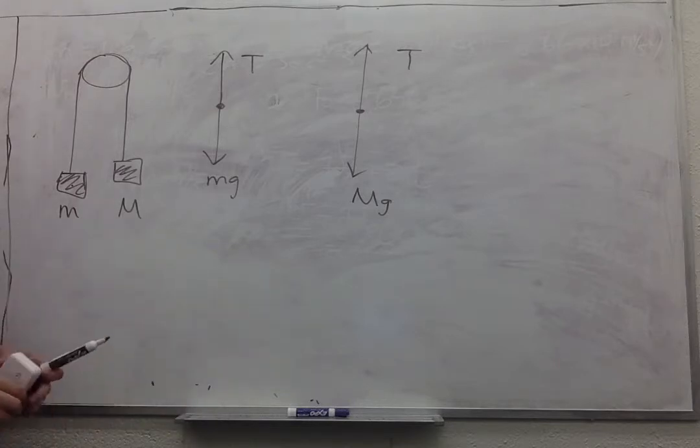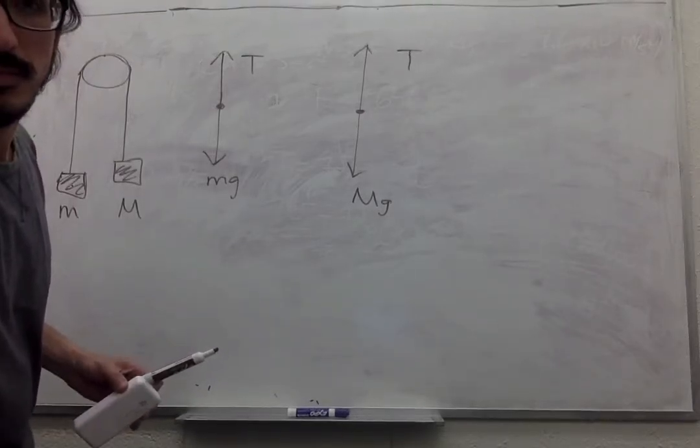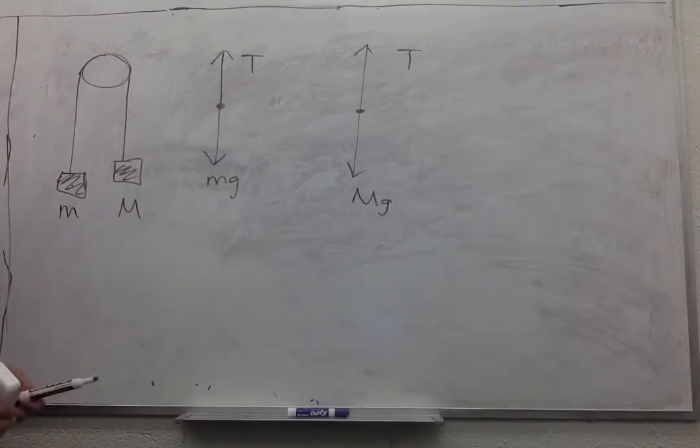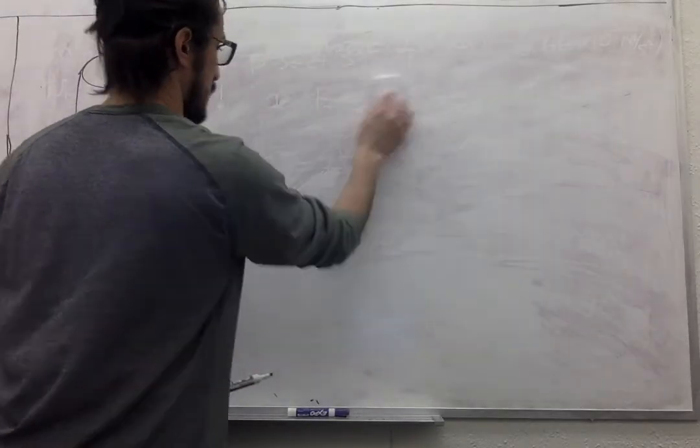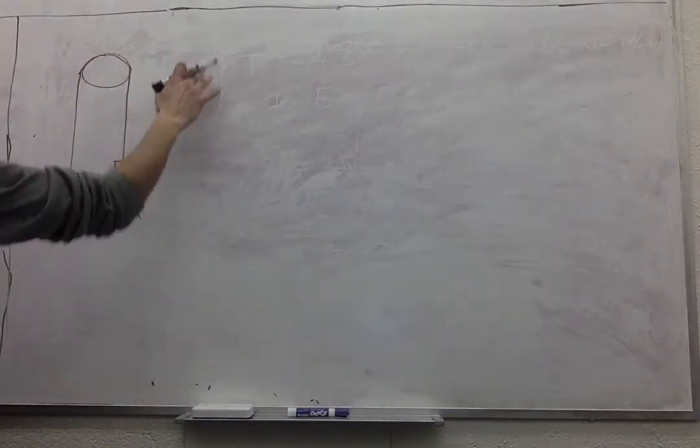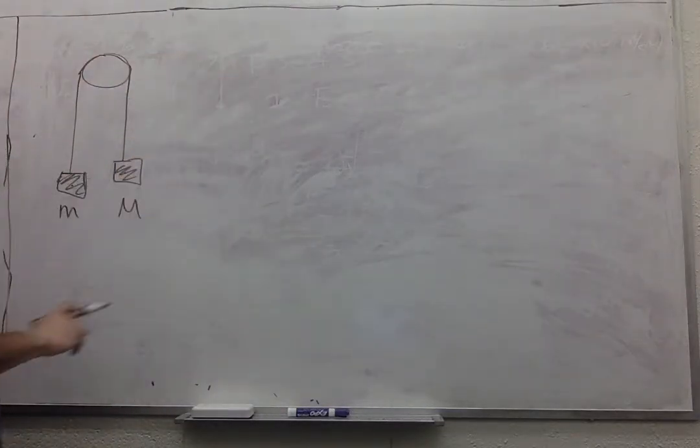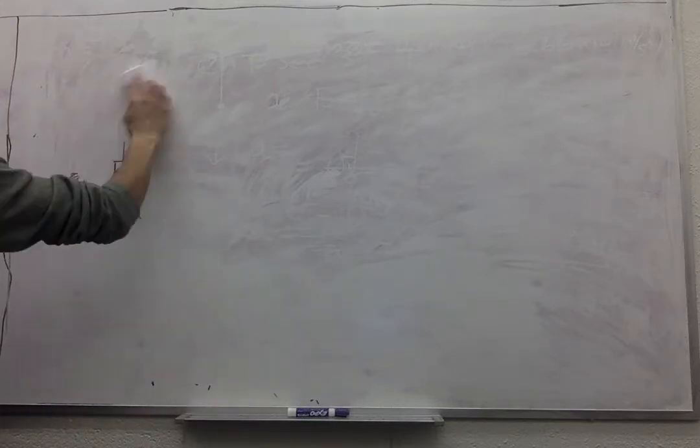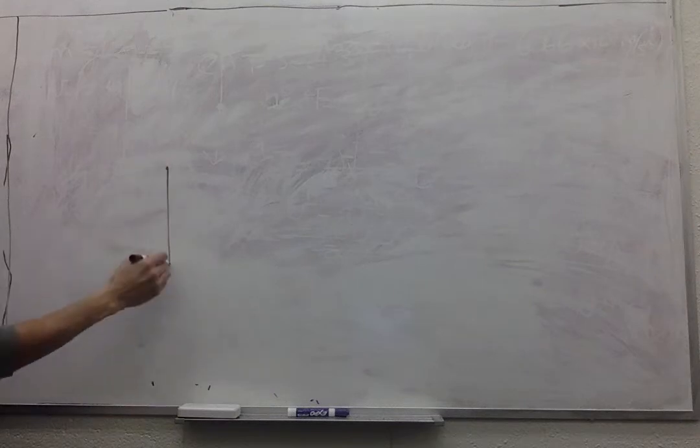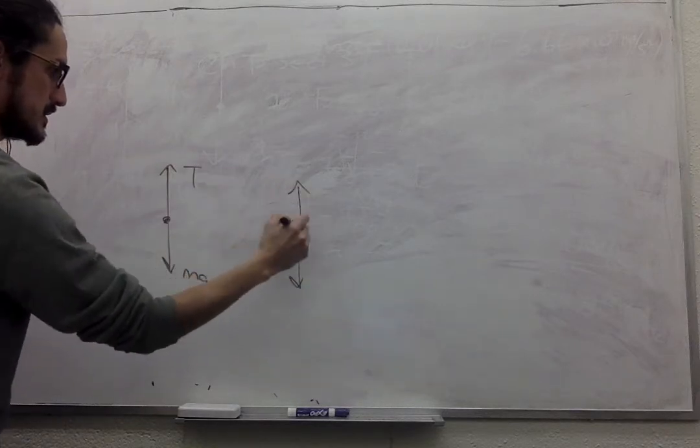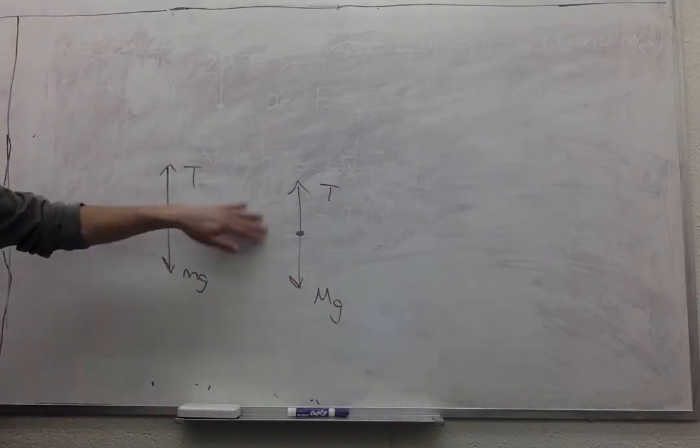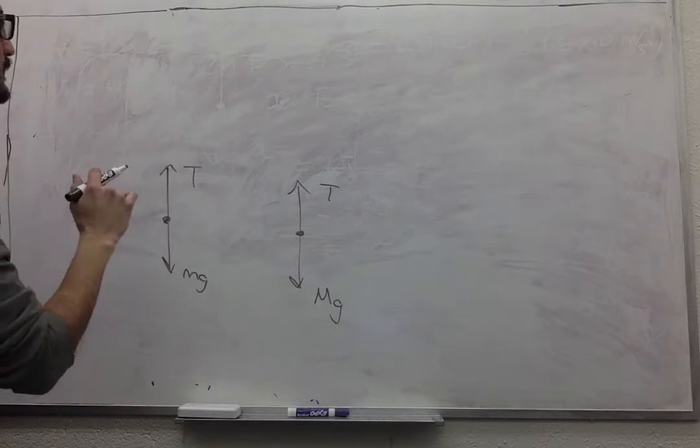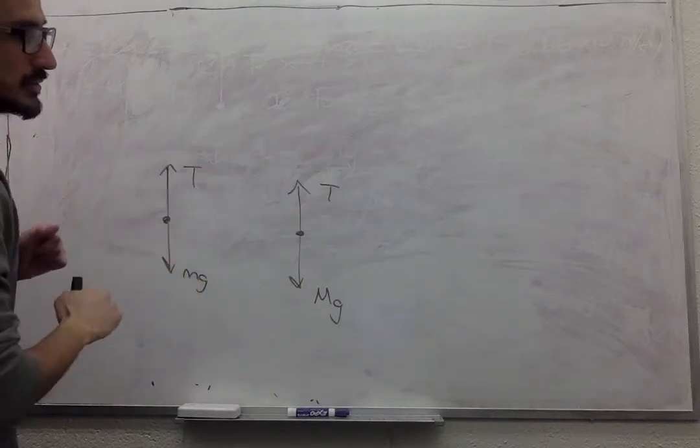And then you have to find the magnitude of the acceleration of the two masses. So directly from the acceleration loop, you can read it directly from your free body diagram. We don't have a horizontal component in this problem.